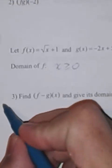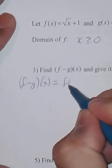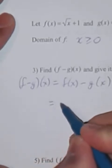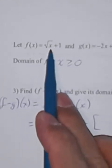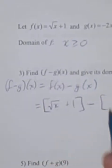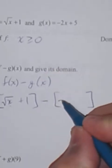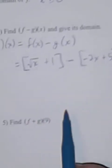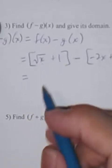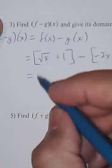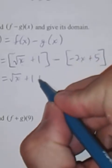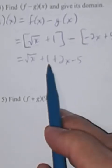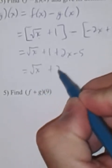Find f minus g of x. We say f minus g of x is f of x minus g of x. f of x is the square root of x plus one, with the square root only on the x, minus g of x which is negative two x plus five. Then we combine like terms — distribute whatever's outside the brackets. The square root of x plus one stays, then distributing the negative: negative one times negative two is positive two x, and negative one times positive five is minus five. Combining plus one and minus five gives: square root of x plus two x minus four. That's f minus g of x.